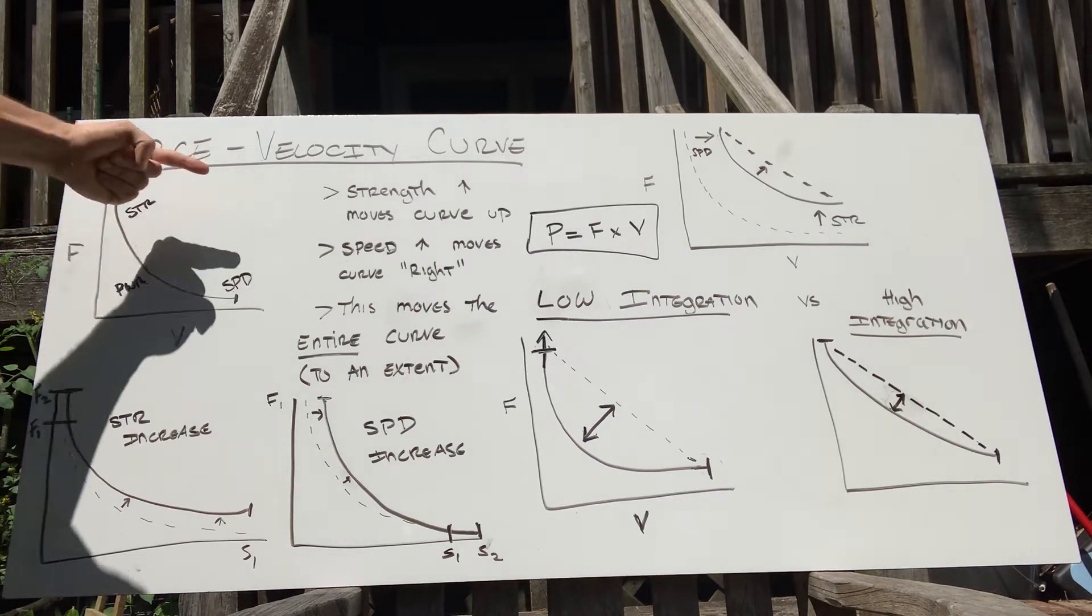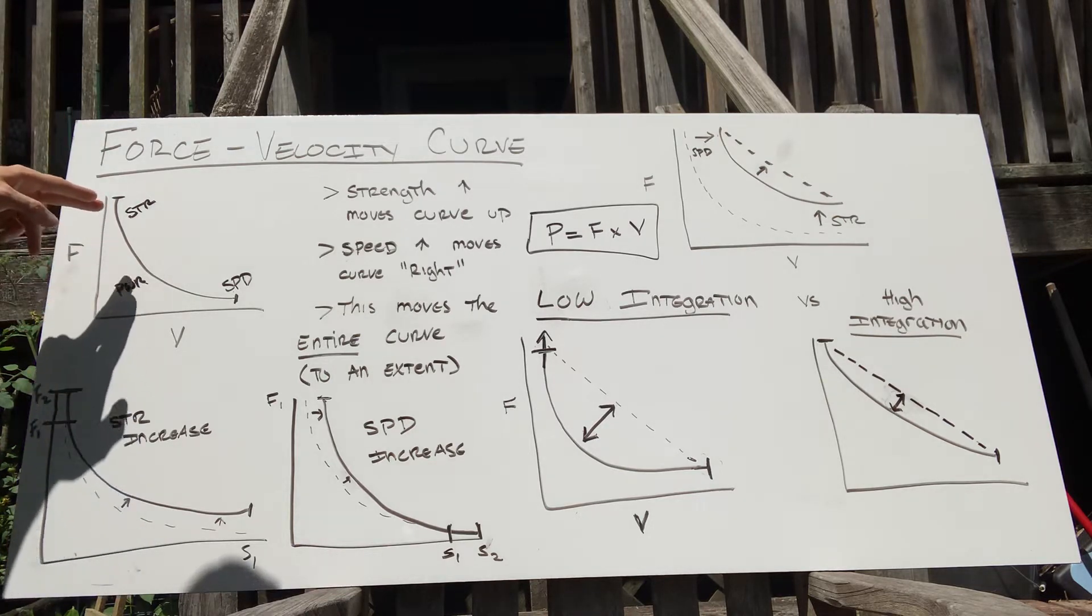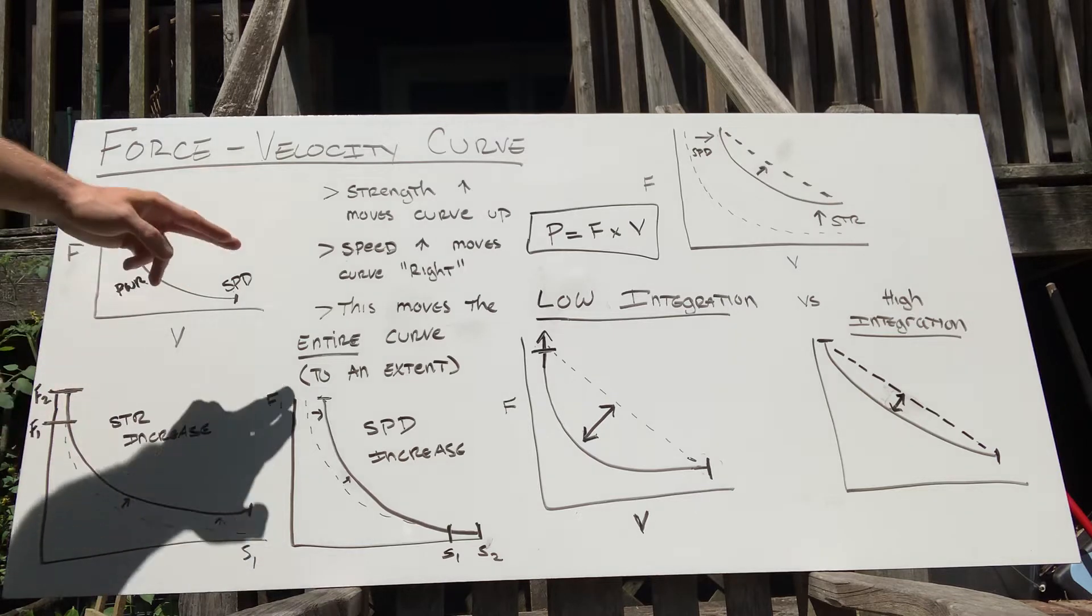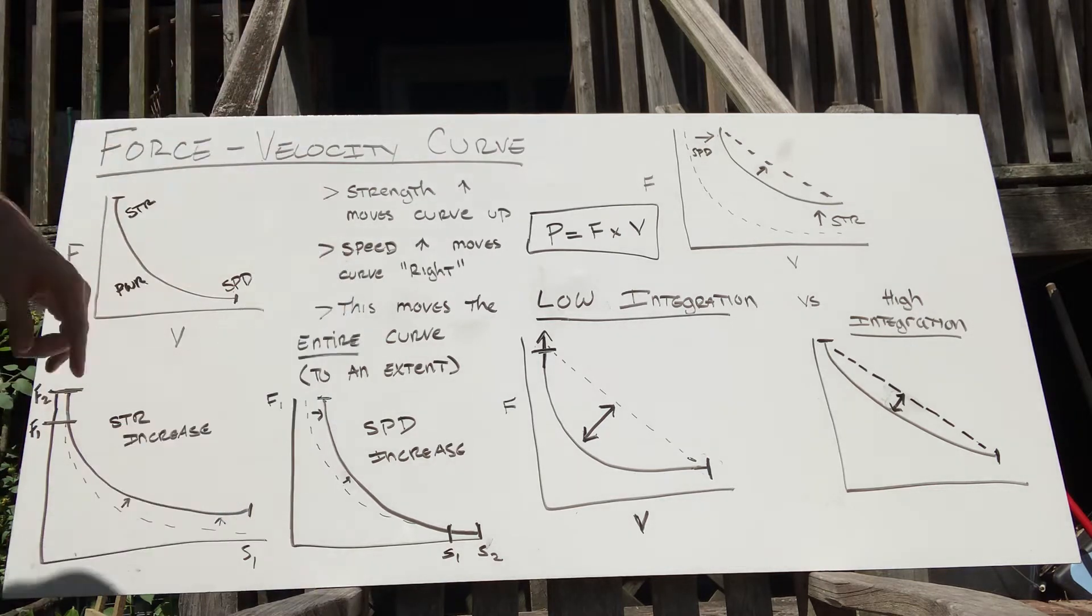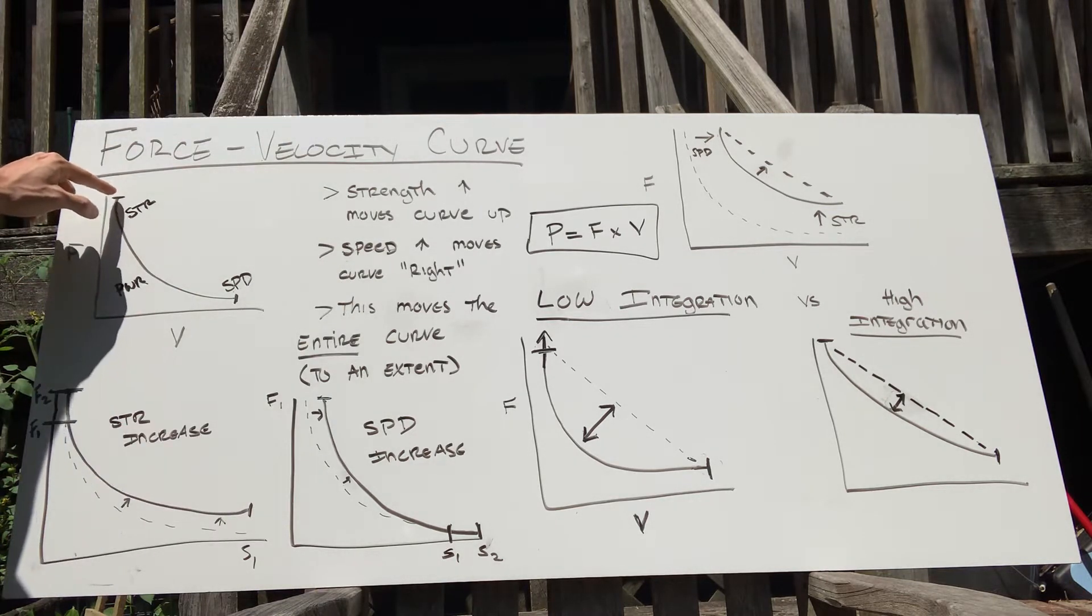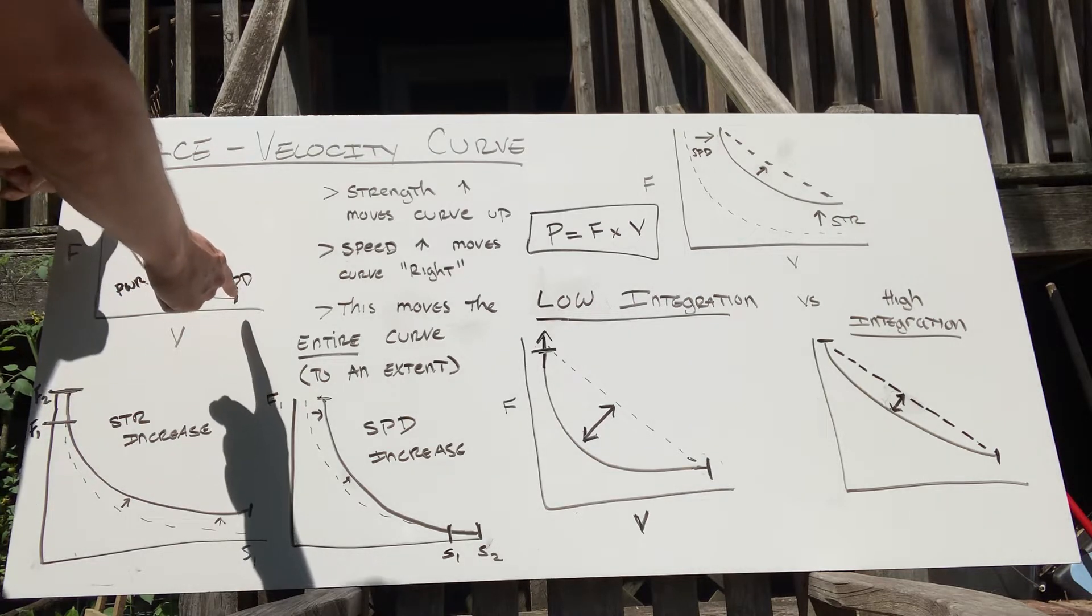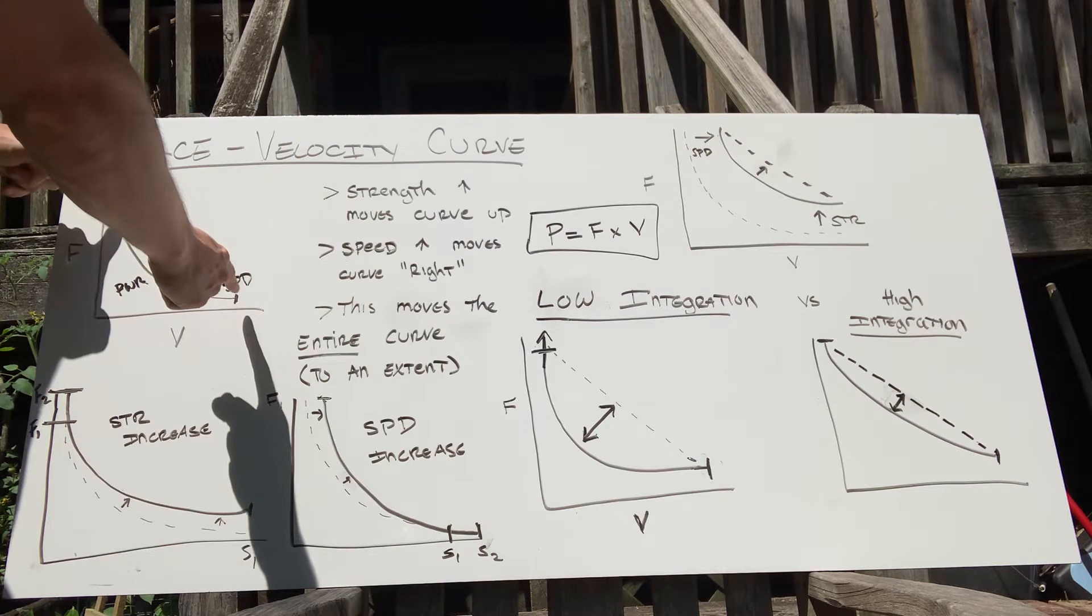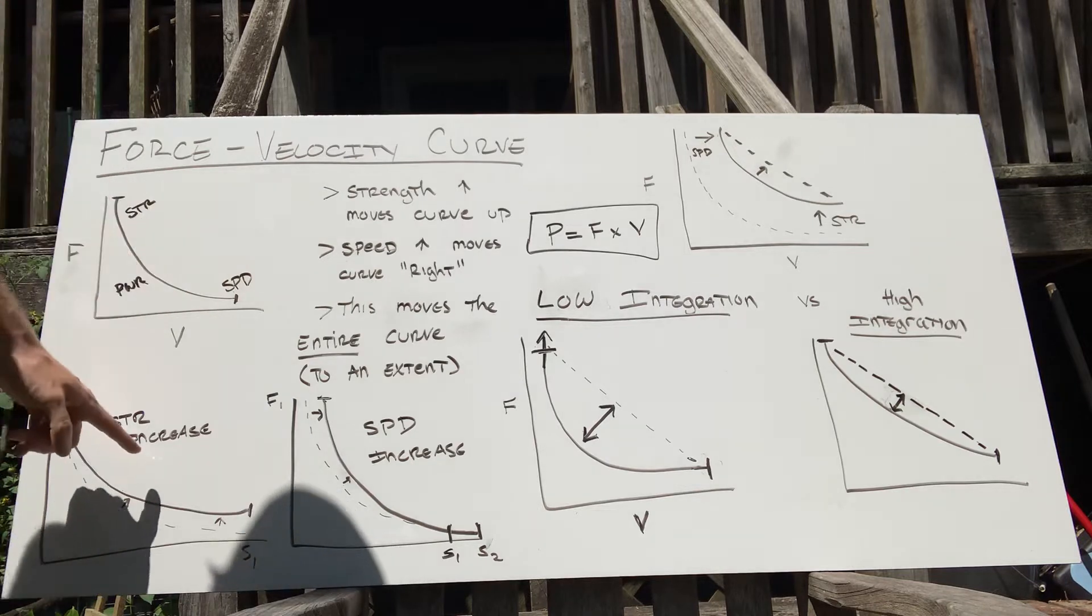Here's what happens when you start applying this in practice. Strength increases when you squat, deadlift, whatever—that's going to move the curve upward. As force increases, you don't just move this line up, you have this piece, this bracket right here, these two ends. As you increase strength, the curve moves upward like this.